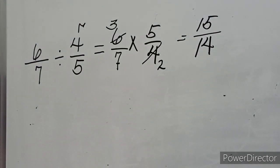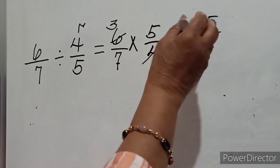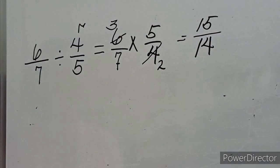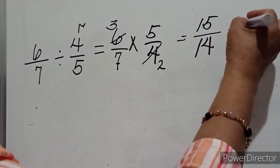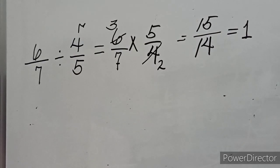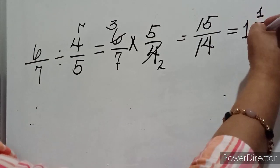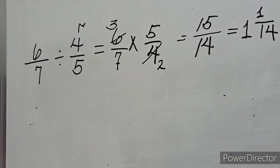We have a result of fifteen over fourteen, which is an improper fraction — a fraction where the numerator is greater than the denominator. We can change it into a mixed fraction by dividing the numerator by the denominator. Fifteen divided by fourteen is one with a remainder of one, so the answer is one and one over fourteen.